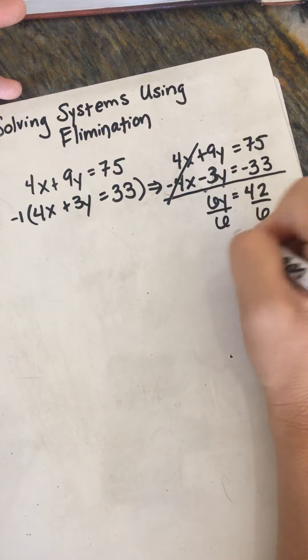And solving for x, 4x equals 12, so x equals 3. So the ordered pair where these two lines intersect is at the coordinate (3, 7).